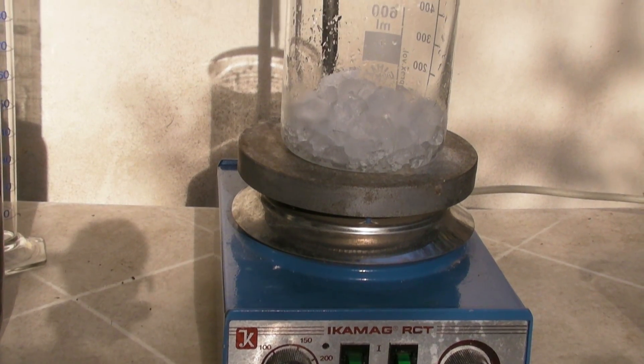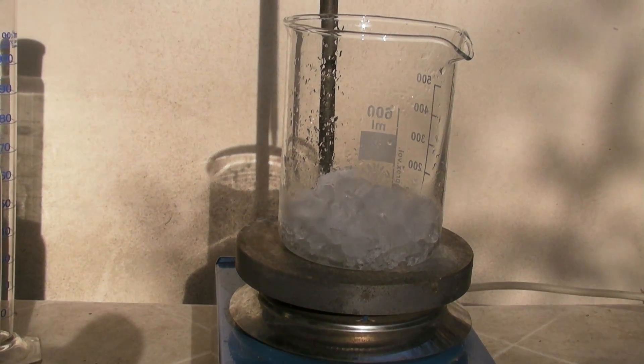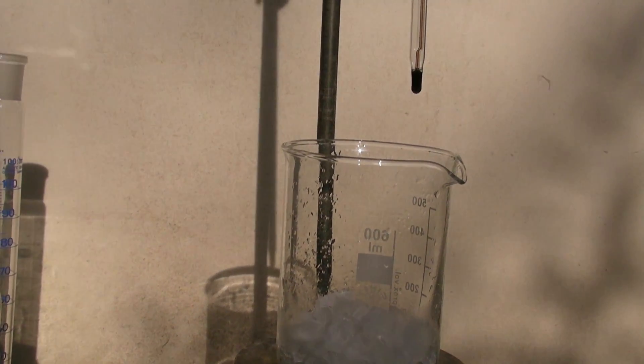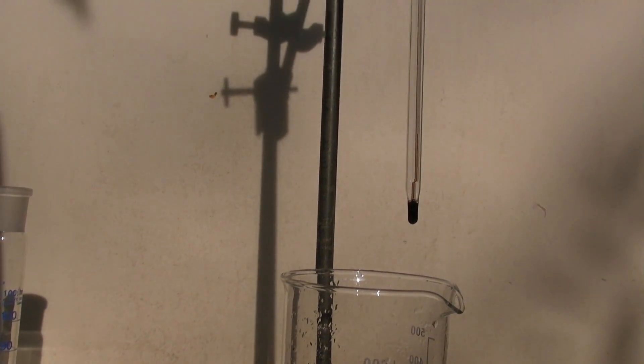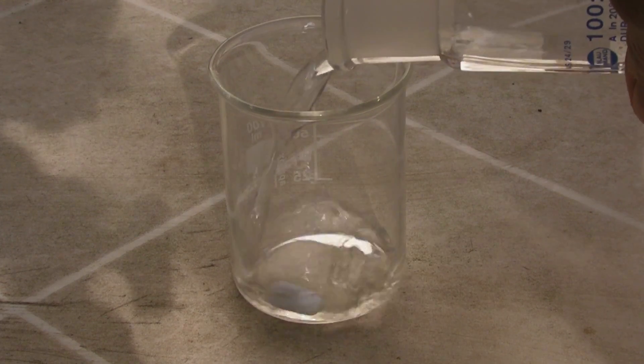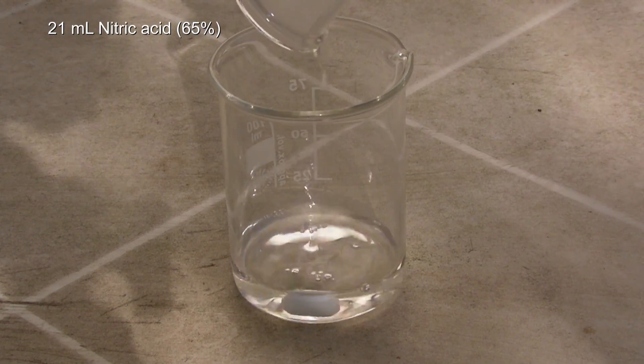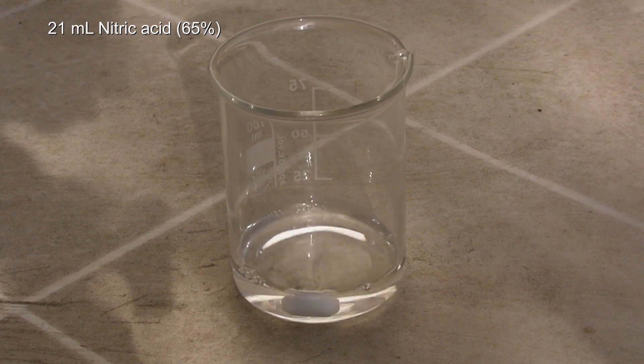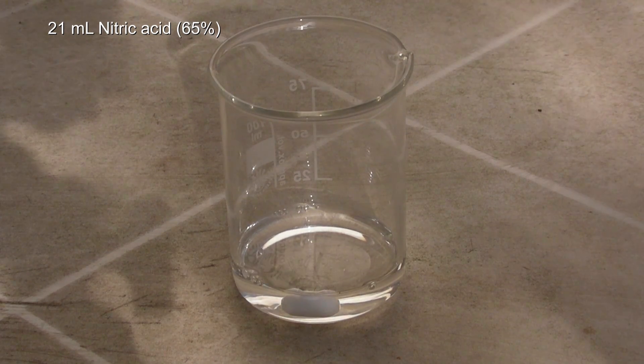The setup is a stirring plate, an ice bath and a thermometer that is attached to a ring stand. First, 21 milliliters of concentrated nitric acid are added to a 100 milliliter beaker with a large stirring bar.